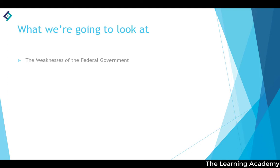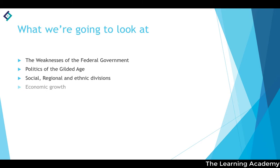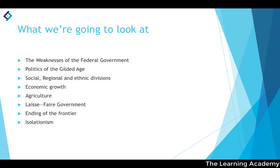In this video we'll look at the weakness of the federal government, the politics of the Gilded Age, social, regional and ethnic divisions, economic growth and prosperity, agriculture and laissez-faire government, the impact of the ending of the frontier, isolationism, and tensions with other nations — specifically tensions over Canada.